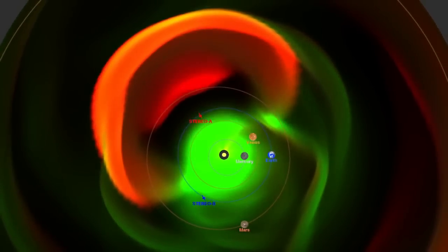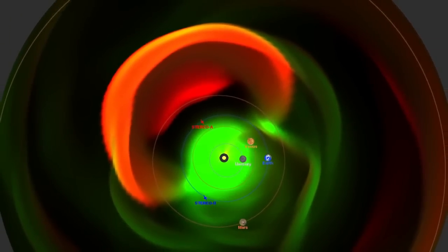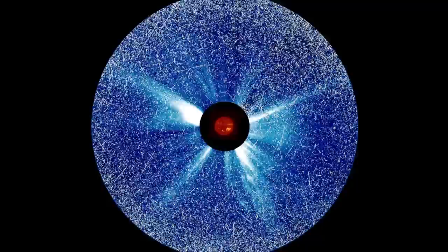NASA's fleet of heliophysics spacecraft watching the Sun from all sides improves our understanding and enables predictions of these solar outbursts.